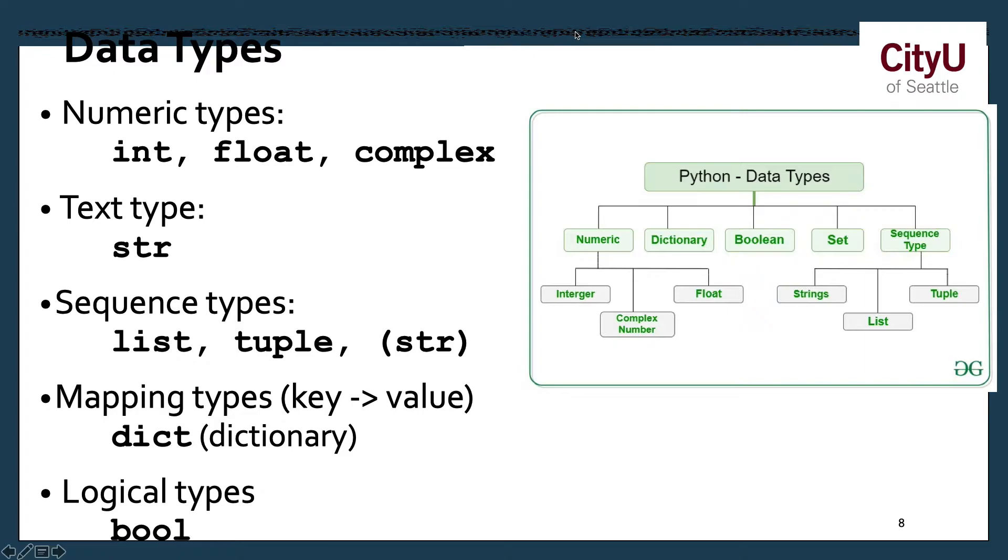As for the data type, we have the usual integer and float. We do have complex, which we don't need to discuss further. It's basically a combination of a number that's having a real and imaginary part. We'll just discuss this if we have a use case. Text type, basically a string. Sequence, you have the list, the tuple. Mapping types, you have the dictionary, key value pairings. A logical type is also bool. Again, the sequence type, there's a string here because it's a string of characters. It's basically a sequence as well. And here is the hierarchy of data type.